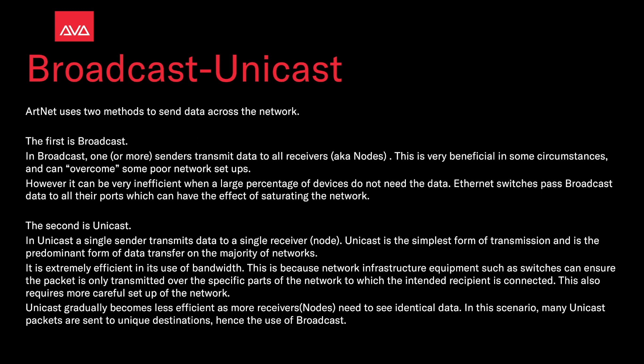The second method is Unicast. In Unicast, a single sender transmits data to a single receiver node. Unicast is the simplest form of transmission and is the predominant form of data transfer on a majority of networks. It is extremely efficient in its use of bandwidth, because the network infrastructure equipment, such as switches, can ensure the packet is only transmitted over the specific parts of the network to which the intended recipient is connected. This also requires more careful setup of the network.